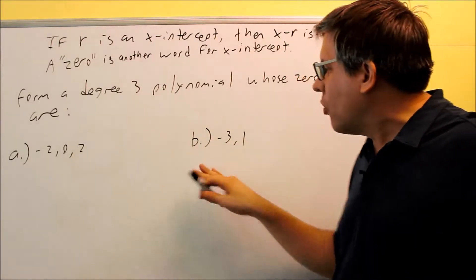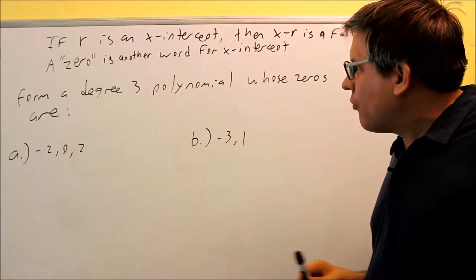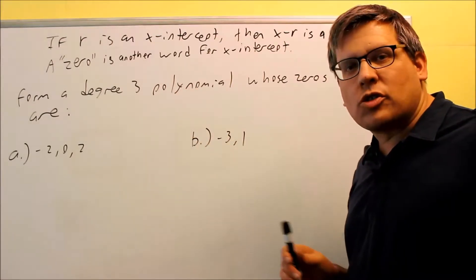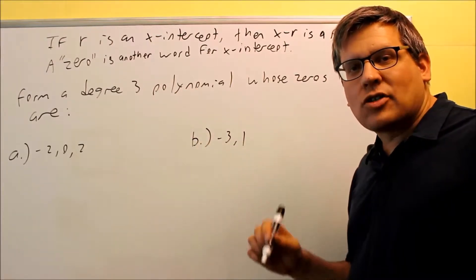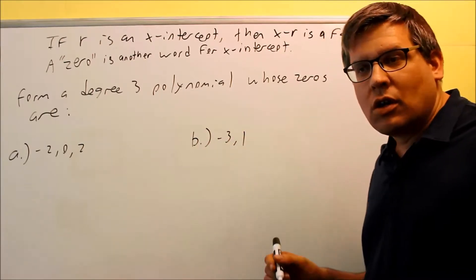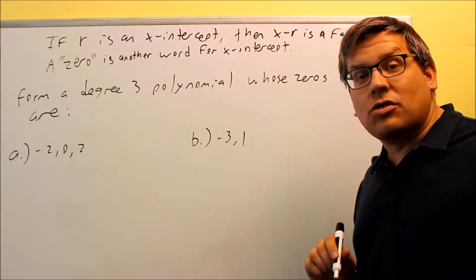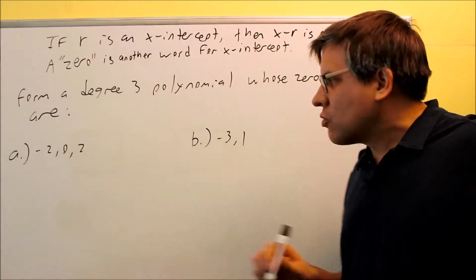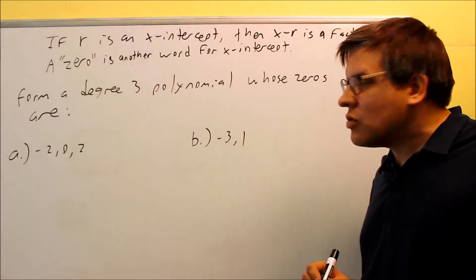So that's what they want you to do for A and B here. They want to form a degree 3 polynomial, which means that that power will have to have an x to the third power somewhere in our answer, or at least the degrees have to add up to 3. Let's do the first one. So the first one, we have negative 2, 0, and 2.